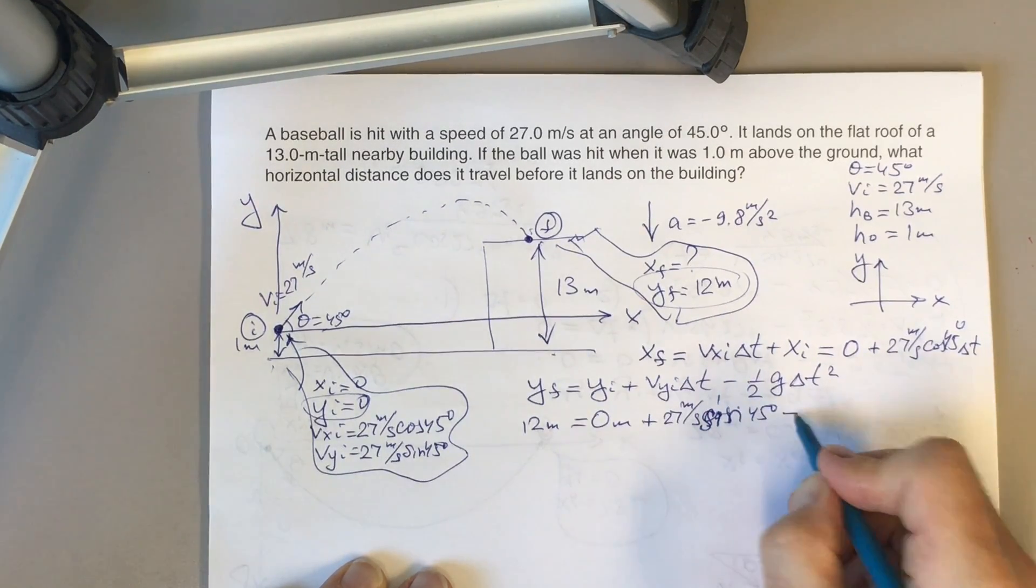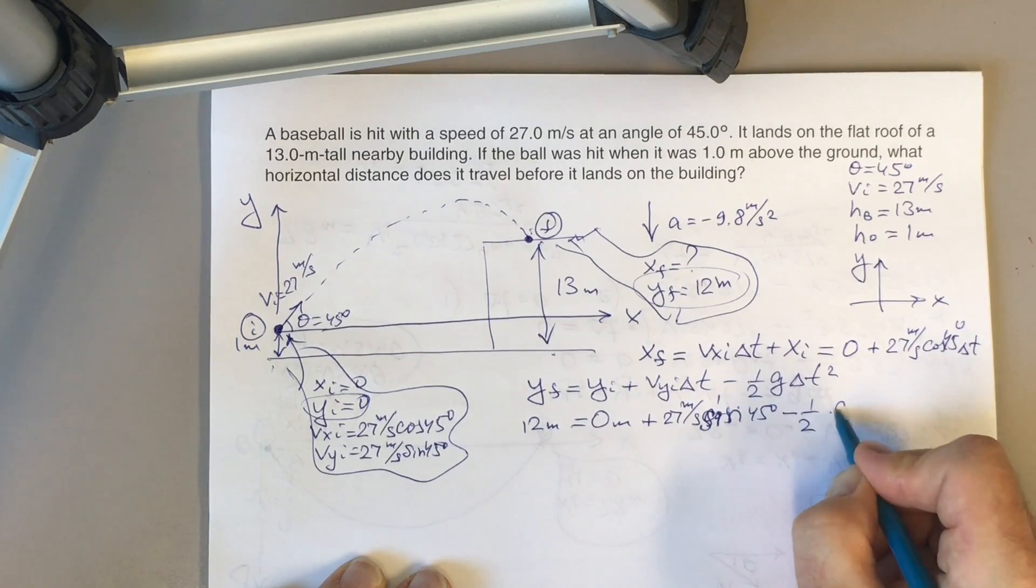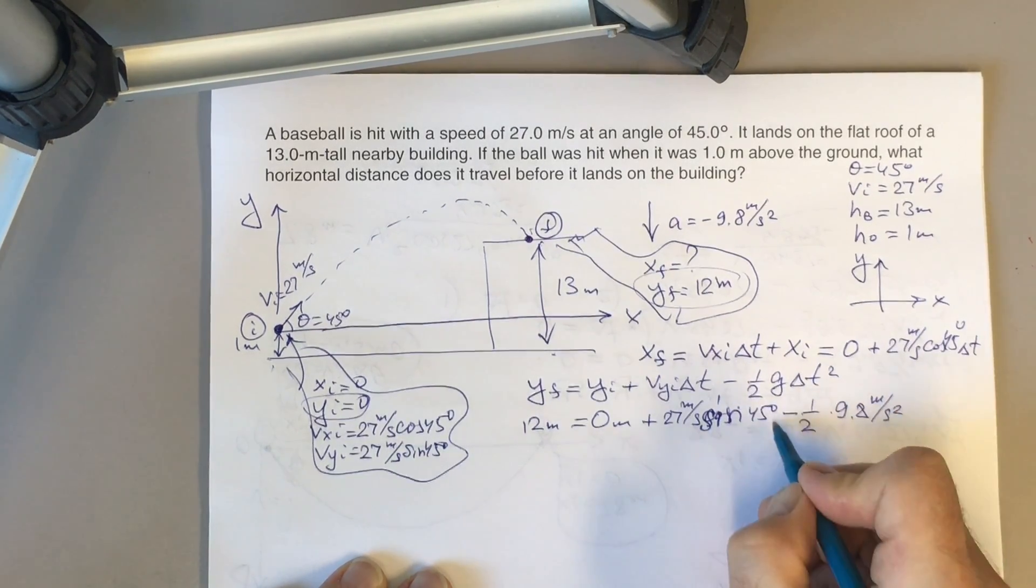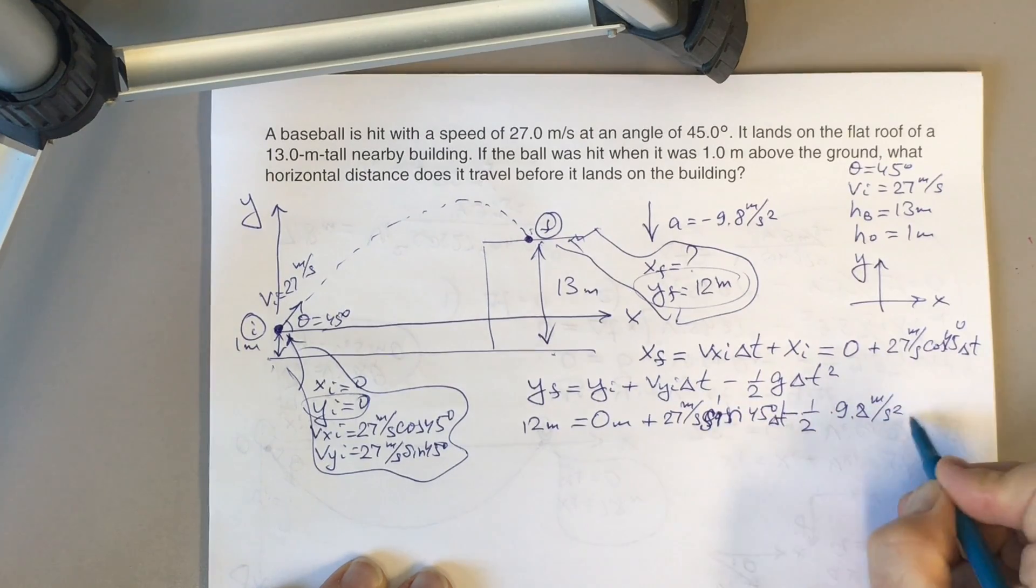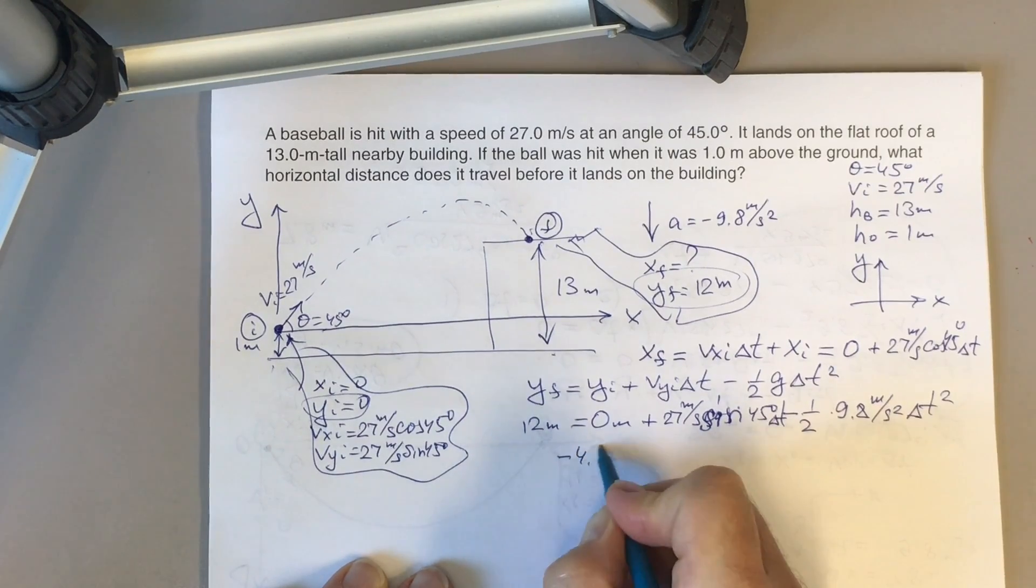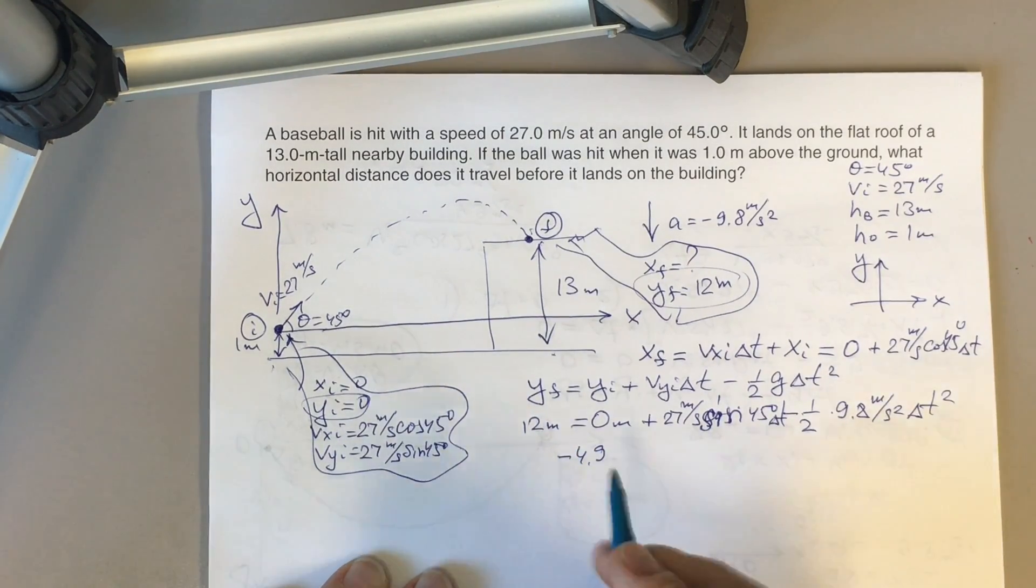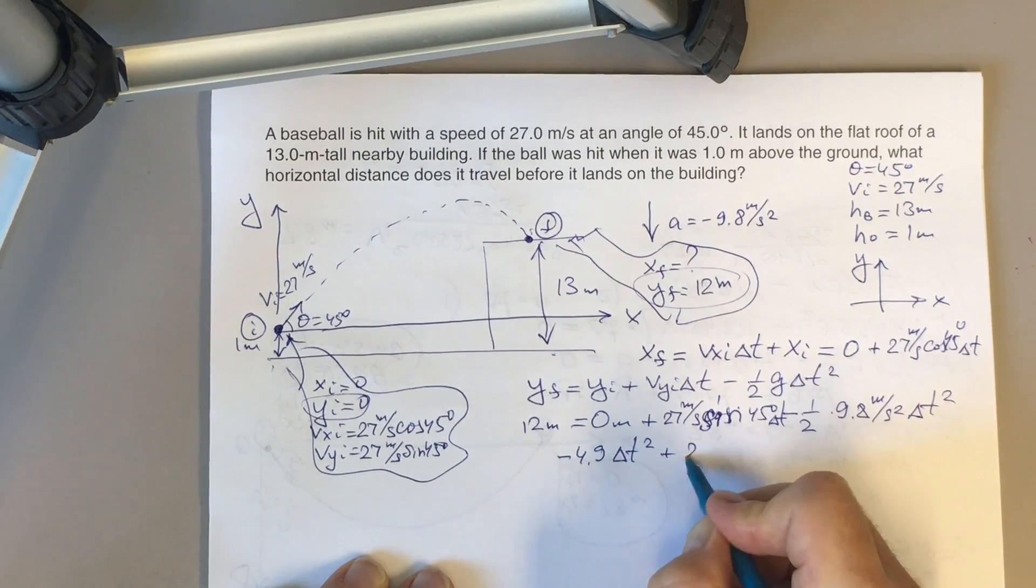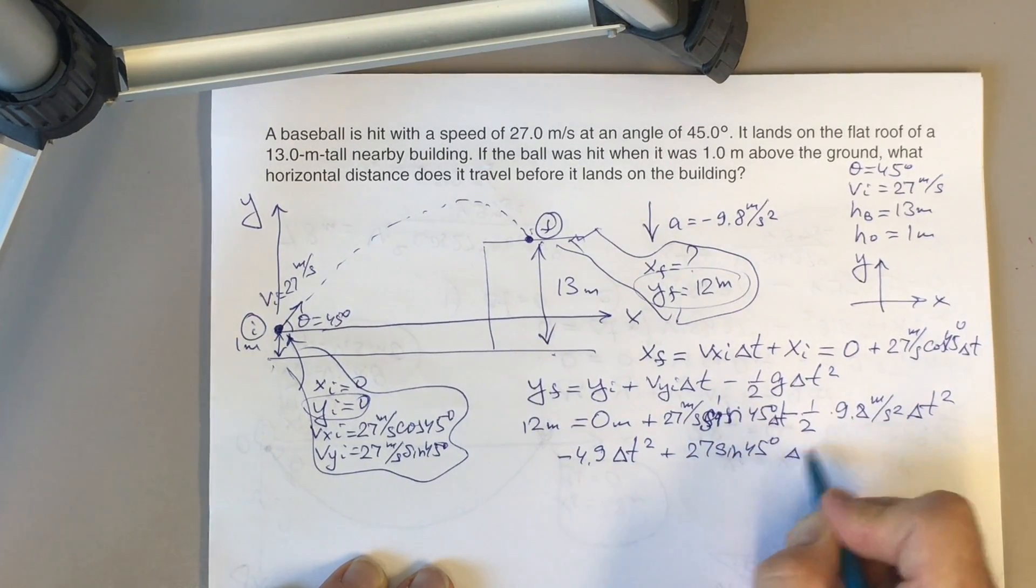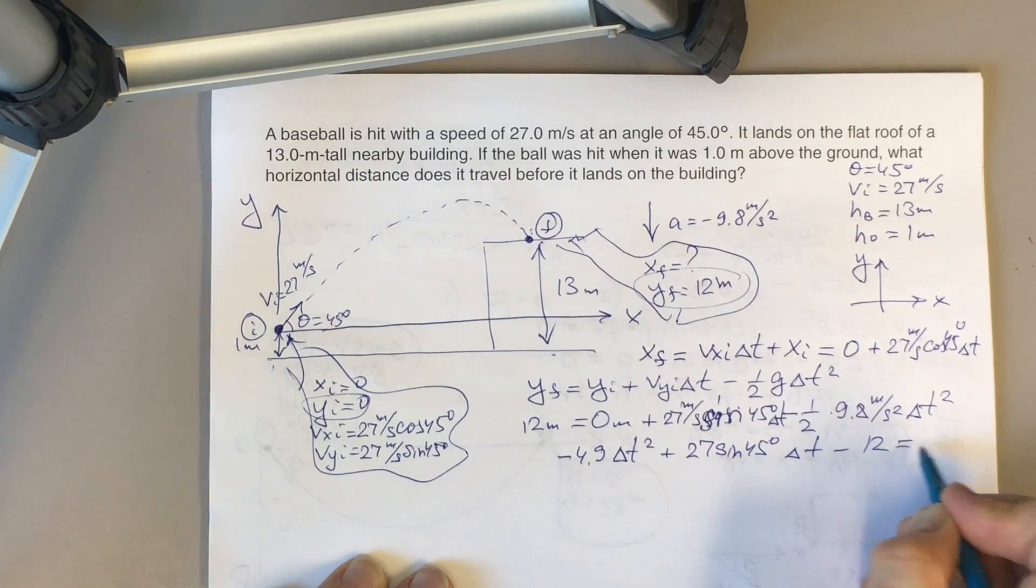I've forgotten to include delta t and delta t squared here. So if you rewrite this equation, you will have minus 4.9 delta t squared plus 27 times sine 45 degrees delta t minus 12 equals 0.